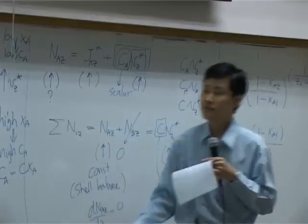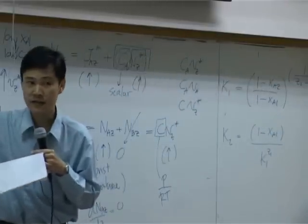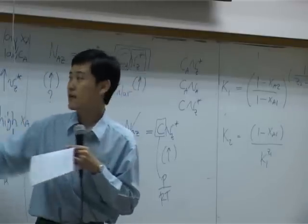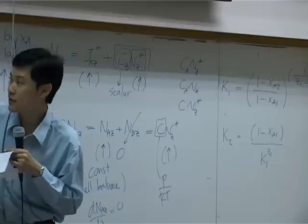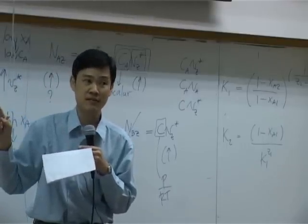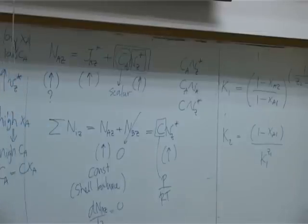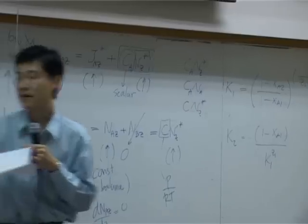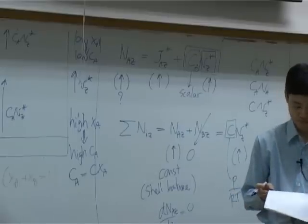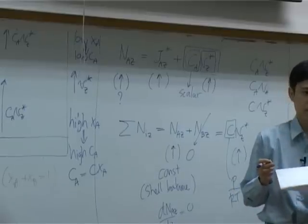Diffusion flux goes up and convective flux goes up, so combined flux goes up. At the bottom, diffusion flux is small but convective flux is large; they add up to one value of n_az. At the top, diffusion flux is large and convective flux is small; they add up to the same value of n_az. These two blue vectors always combine to give the same n_az, which is constant in size throughout the column.